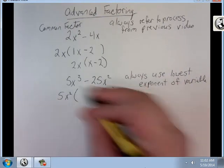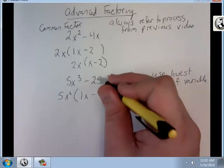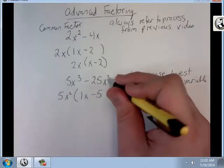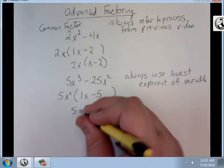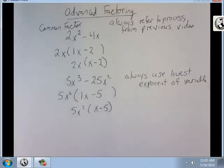Always use lowest exponent of variable. x cubed divided by x squared is just x minus 5. No x is left. So this is 5x squared times x minus 5. And that's all there is for a common factor.